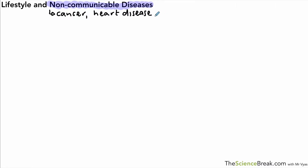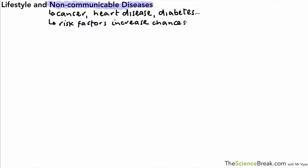Today we're going to talk about lifestyle and non-communicable diseases. Non-communicable diseases are things like heart disease, cancer, or type 2 diabetes. These are diseases that cannot be caught by standing near someone who has them, and they're not caused or caught by an infection. However, there are factors that can increase the chance of getting these diseases, and we call those risk factors.